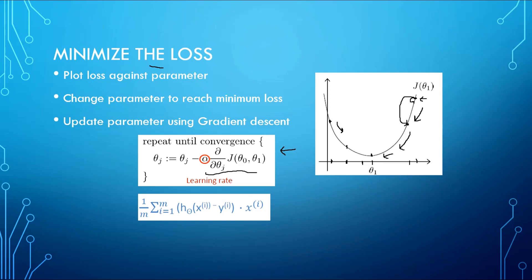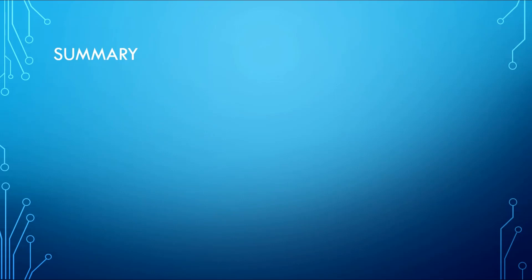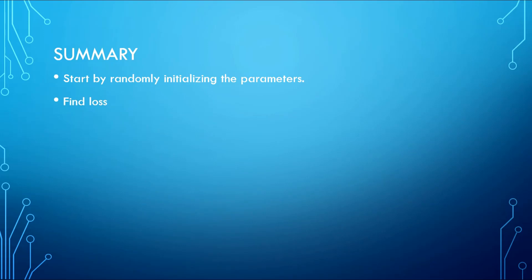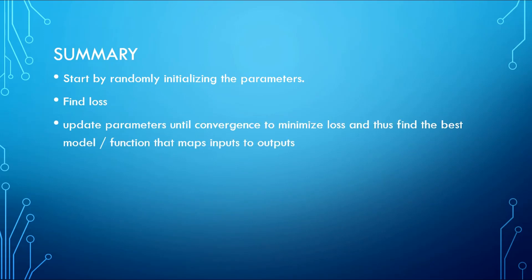Now that we have seen how to minimize the loss using gradient descent, let us summarize the linear regression algorithm. In Linear Regression, we start by randomly initializing the parameters to get a random model. For that model we compute the value of loss, then we update our parameters until convergence — we keep updating until we have found the optimum value of loss — in order to minimize the loss and find the best model that maps inputs to outputs.